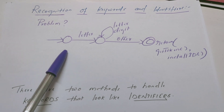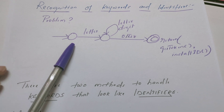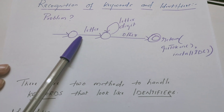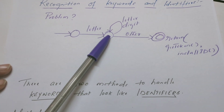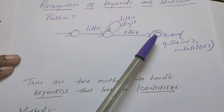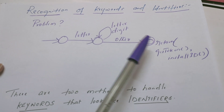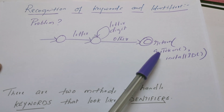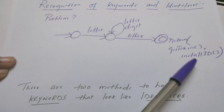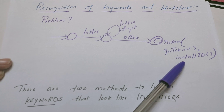Look at this transition diagram. We know that this transition diagram recognizes the identifiers. Any identifier should begin with a letter and further it might be followed by any number of letters or digits. So, if the lexeme reaches this final state, it is recognized as an identifier. This final state returns the token value or token ID of the particular token, and the same lexeme is installed into the symbol table.